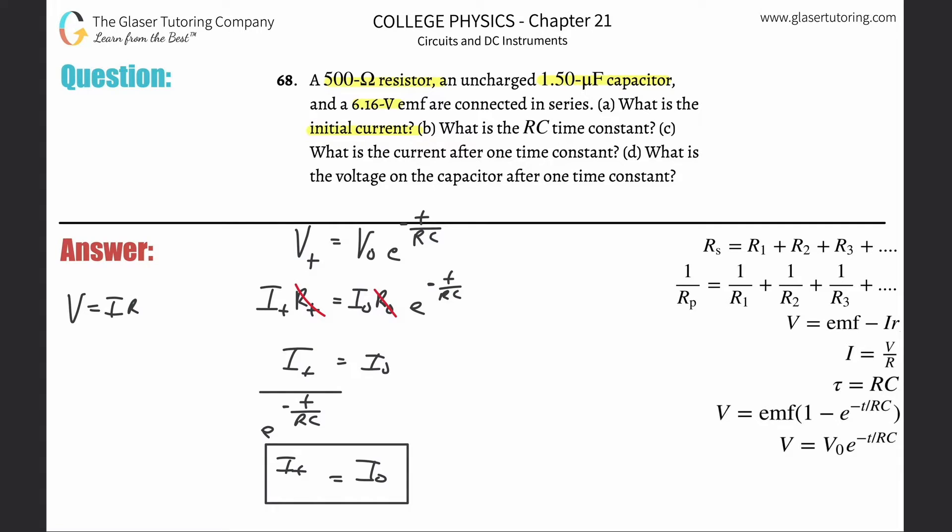So it's simply going to be the voltage from the EMF of 6.16 equals that current multiplied by that resistance of 500 Ohms. It just goes back to a basic problem. So it's simply 6.16 divided by 500, and the current works out to be 0.0123 amps. That's the initial current. Cool.